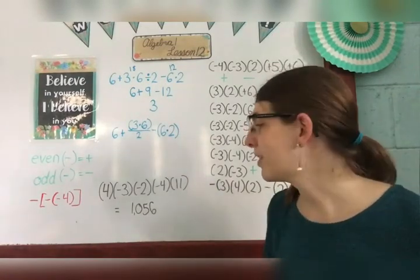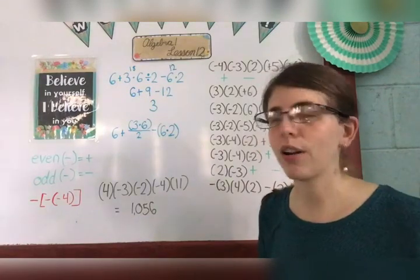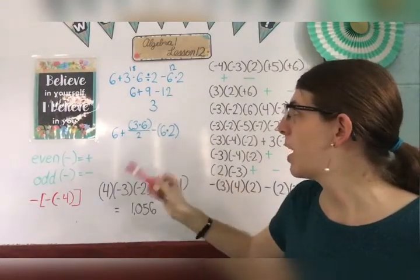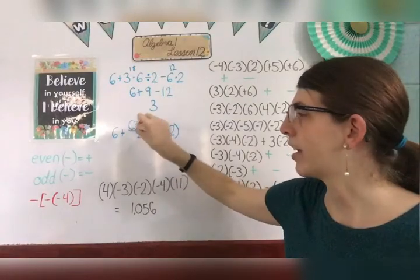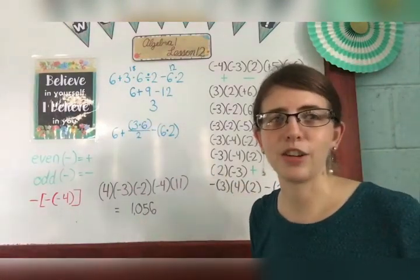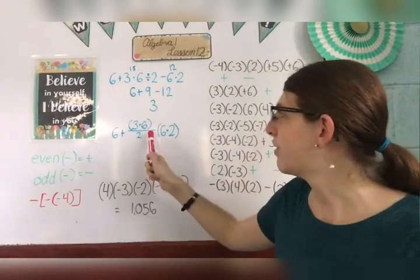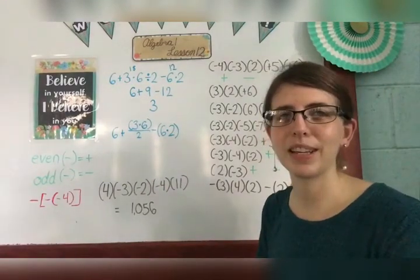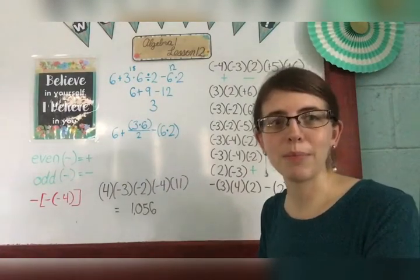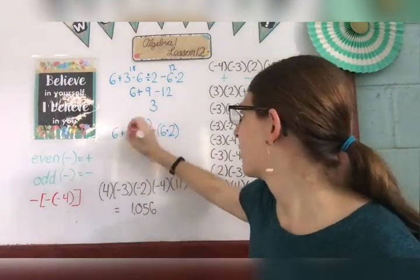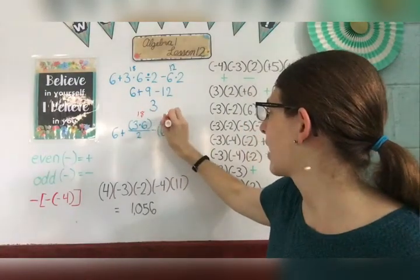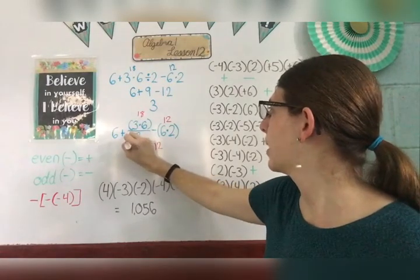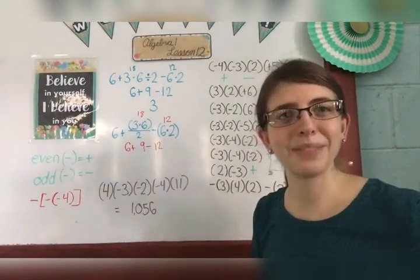Now, if I wanted to use symbols of inclusion to make this a little bit clearer, this is what it would look like. I do my 3 times 6 before I do my division because it came first, so I put this on top in the numerator in parentheses. I could leave out the parentheses when it's in the numerator, but this makes it even clearer. Divided by 2, because that comes next. And then I have minus 6 times 2 in parentheses, because parentheses always say do me first. So I would do the same thing: 6 times 3 is 18, 6 times 2 is 12, 18 divided by 2 is 9. I end up with 6 plus 9 minus 12, which gives the same answer.